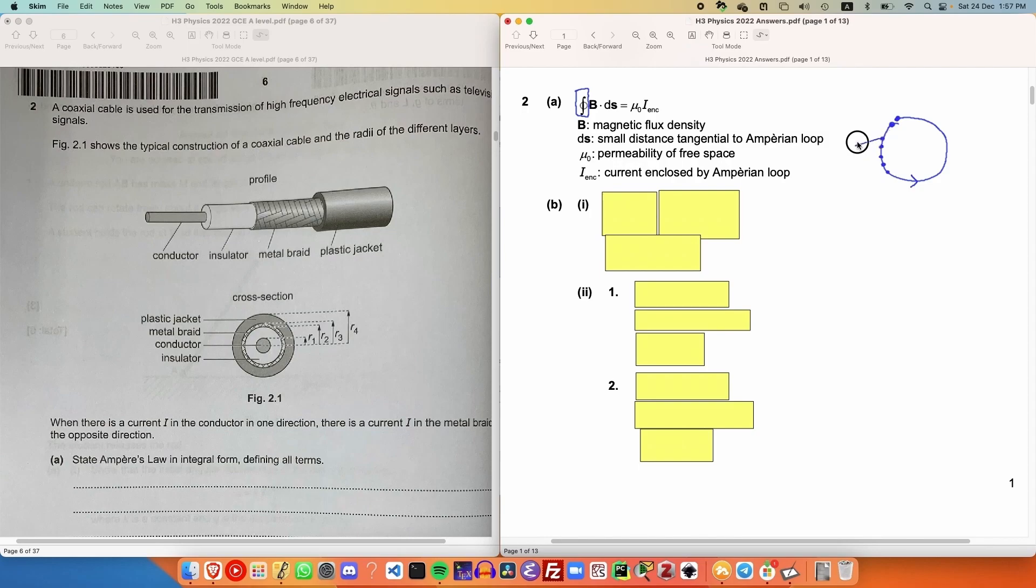B is the magnetic flux density at every point along the loop. So for example, B might be this vector over here, B might be that vector over there, B might be the vector over there, and so on. And ds is a small tangential vector along the loop. This means that at every point along the loop, we draw a small tangent vector to the loop, and that is ds.